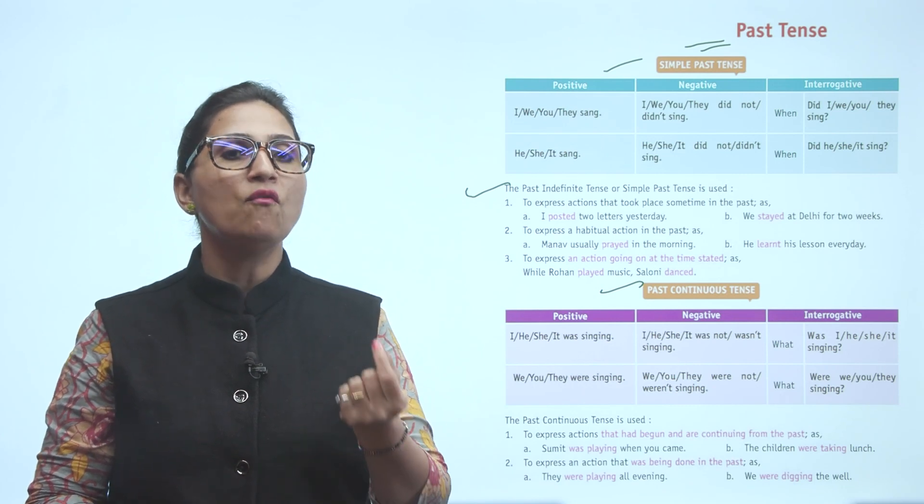In past continuous, in positive, negative, or interrogative, based on the subject - I, he, she, it - you use the helping verb 'was.' Then you use the first form with '-ing.' With the main verb, you add '-ing.' The main verb here is 'sing,' so we write 'singing.'